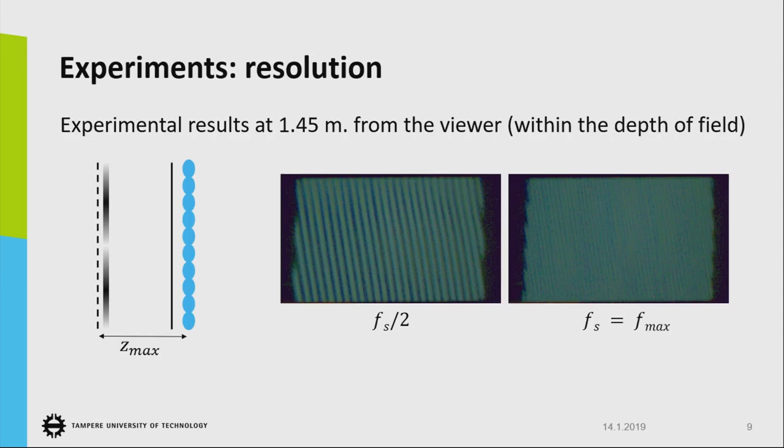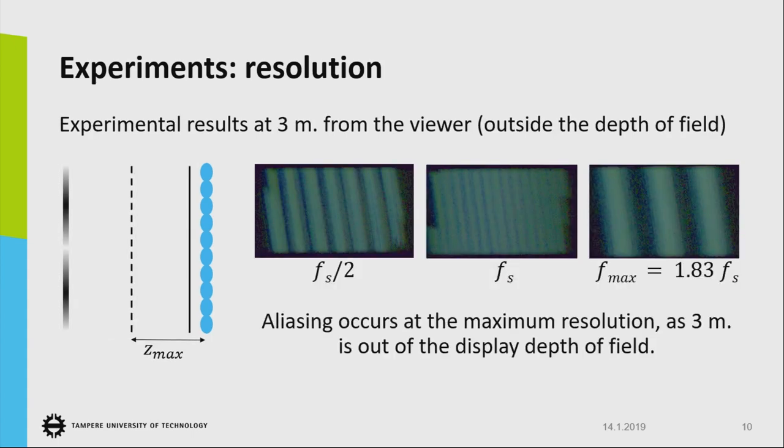The experiments about the resolution: first we created a 3D sinusoidal pattern slanted within the depth of field at 1.45 meters. We showed the images at full resolution, the sampling rate of this sinusoidal pattern at full resolution. It can still resolve, and at half of that full resolution you can see more clearly.